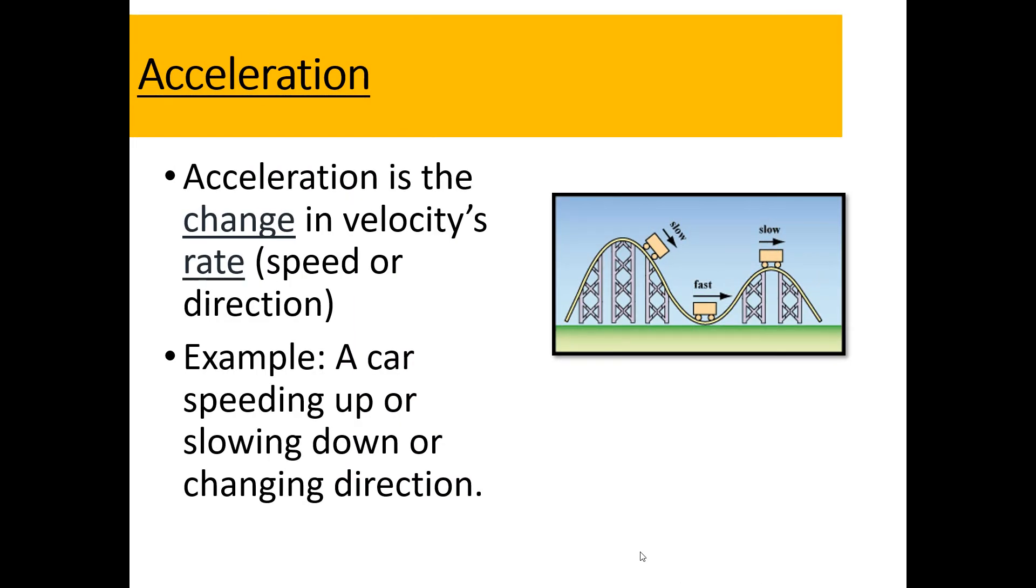Acceleration is just another way that we can describe an object's motion, and basically it's how an object's velocity is changing. By definition, acceleration is the change in velocity's rate, so we could be talking about a speed and or a direction. For example, if a car speeds up, it is accelerating. If a car slows down, it is also accelerating, but we have a term that we use for that, and it's called deceleration.